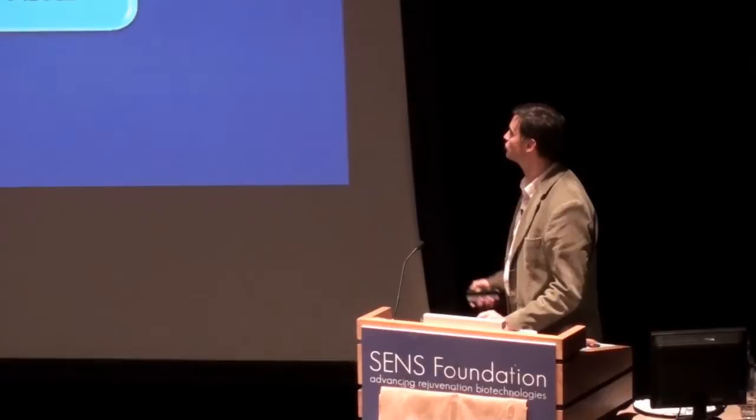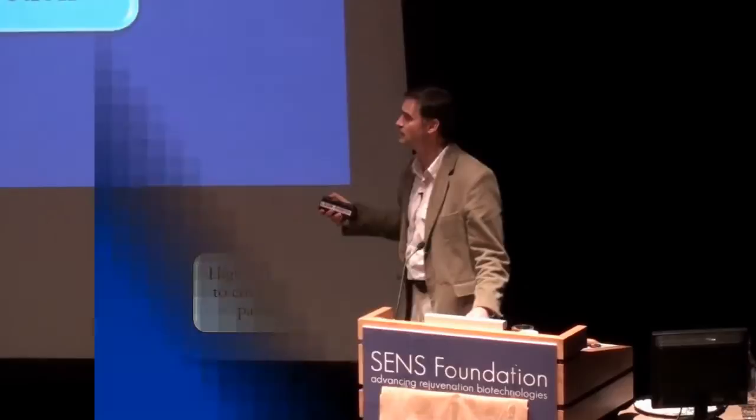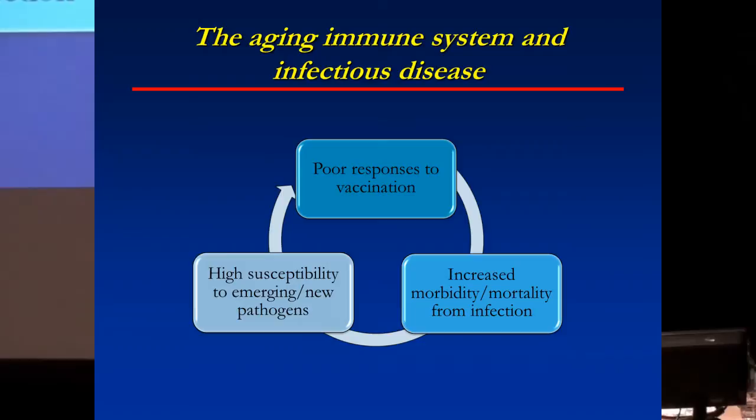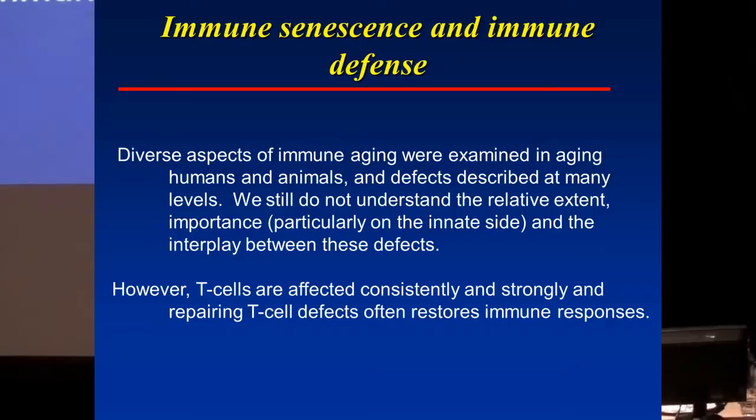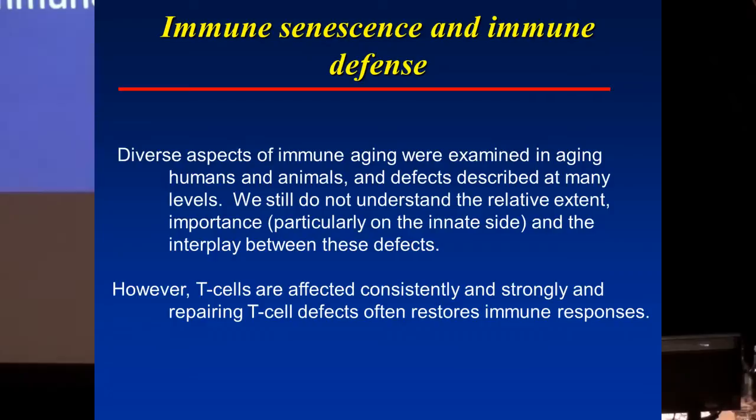The problems we encounter in aging have to do with increased morbidity and mortality from infection, high susceptibility to new and emerging pathogens, and unfortunately, the best tool immunologists have to protect us — vaccination — is also not working very well in older adults. There are profound problems with adaptive immunity, and within that realm, T cells are the arm affected most consistently and most strongly. Very often, if you repair T cell defects, you can actually bring back the immune responses in aging.